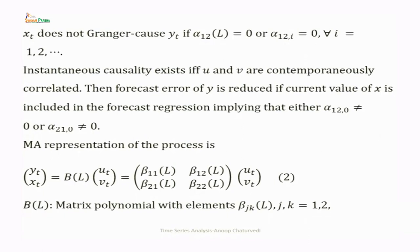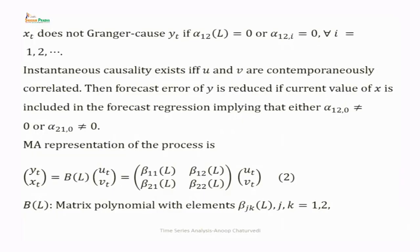Instantaneous causality exists if and only if the current value of u_t is correlated with the current value of v_t. If u_t and v_t are correlated, then instantaneous causality exists, because the forecast error of y is reduced if the current value of x is included in the forecast regression — either α₁₂(0) ≠ 0 or α₂₁(0) ≠ 0.